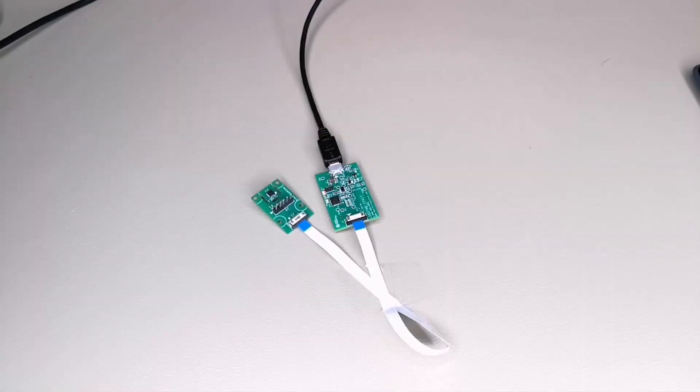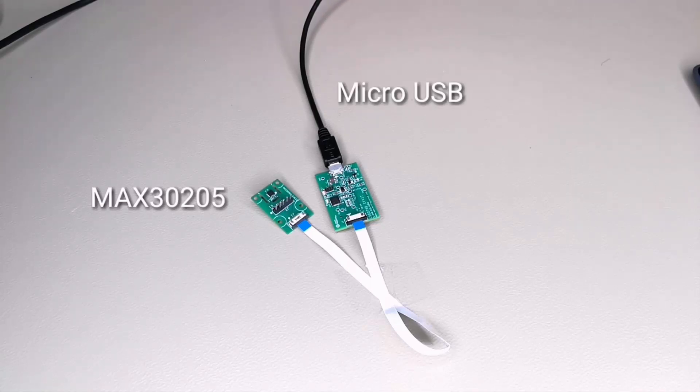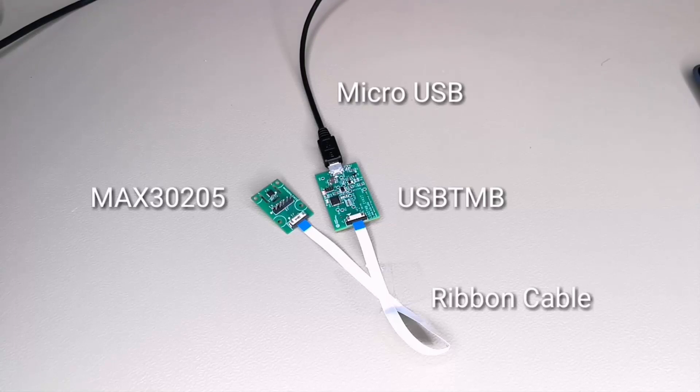The MAX3205 EVSYS consists of a MAX3205, a micro USB cable, a ribbon cable, and a USB to I2C controller. Connect the boards together using the ribbon cable and connect to the PC.